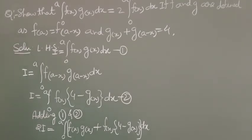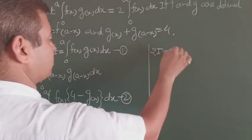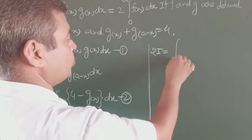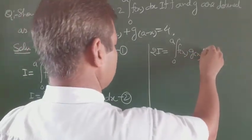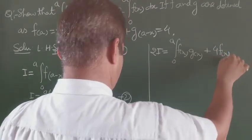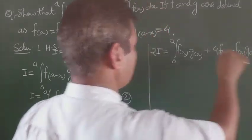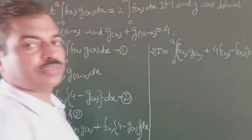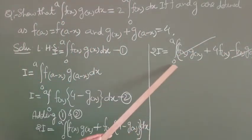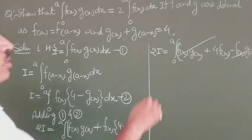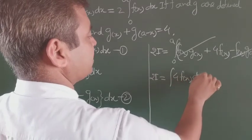Now let us open the bracket: 2I = ∫₀ᵃ [f(x)·g(x) + 4f(x) - f(x)·g(x)] dx. You can see f(x)·g(x) and negative f(x)·g(x) cancel — one positive, one negative — so 2I = ∫₀ᵃ 4f(x) dx.